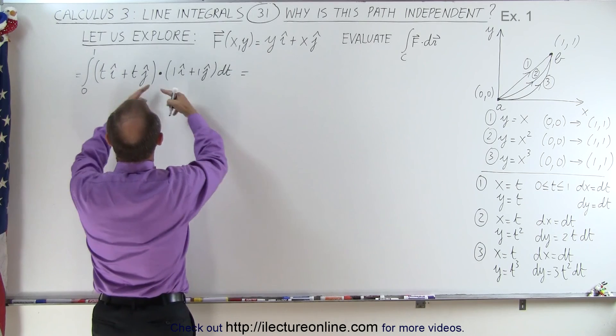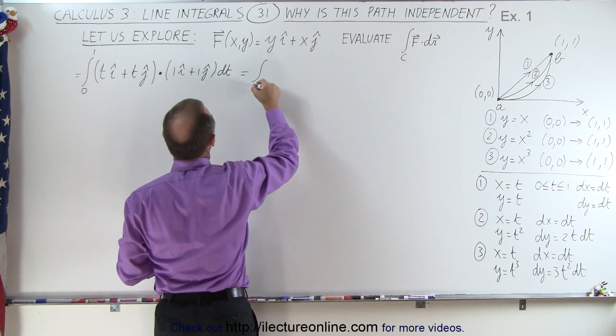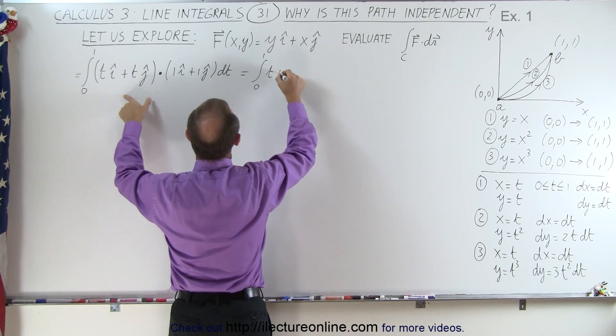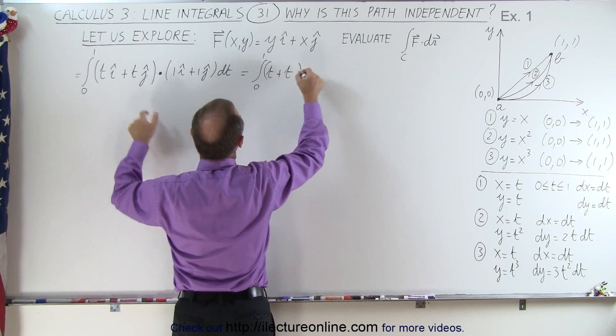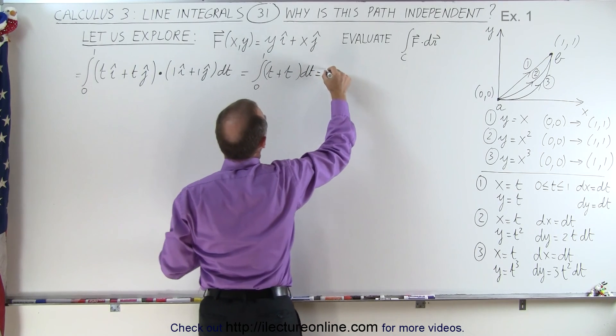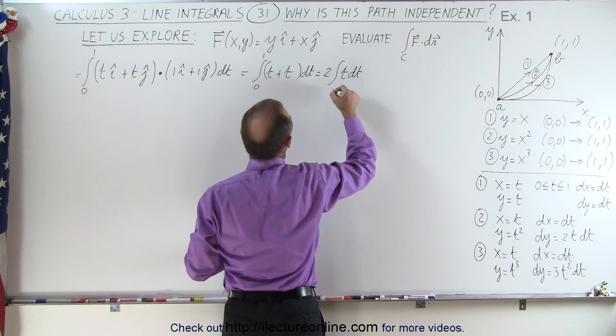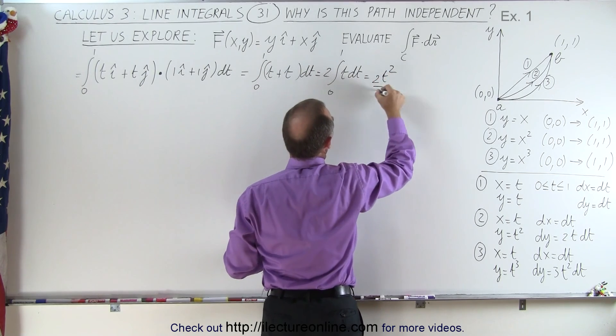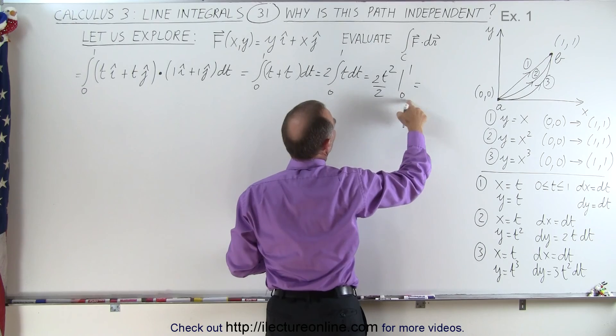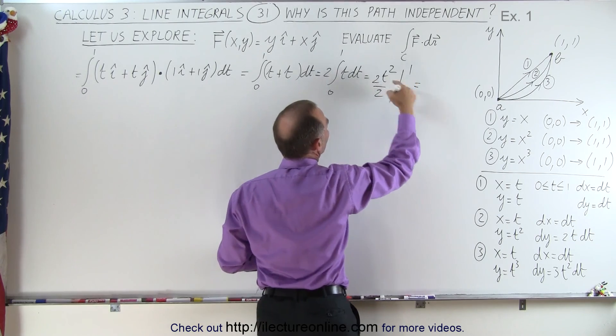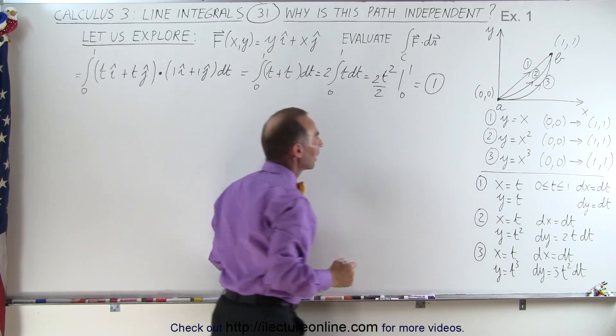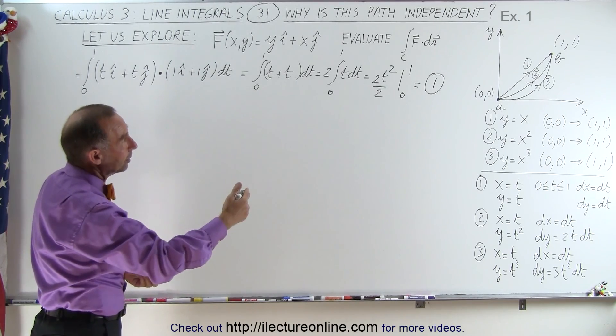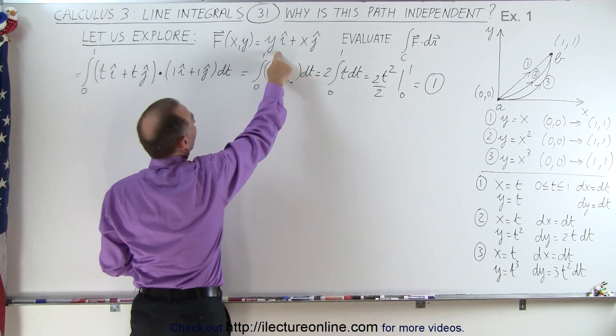So when we multiply this out, we get the integral from 0 to 1. Now because of the dot product, we end up with a scalar quantity. We end up with t plus t times dt, which is 2 times the integral of t dt from 0 to 1, which is equal to 2t squared over 2 from 0 to 1. And we plug in the lower limit, we get 0. Plug in the upper limit, we get 1. So that's the result that we get for the line integral from (0,0) to (1,1) for the vector field yi plus xj.